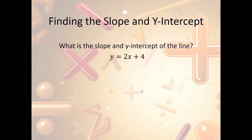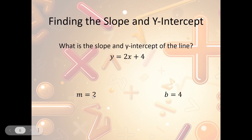Now let's pick out the slope and y-intercept from an equation. We're given y equals 2x plus 4, and we want to know the slope. We know that the slope is the one attached to x — it's a slippery slope to get hung up on your ex — so the one attached to x is 2. The slope is 2. The y-intercept is the lonely one, and the lonely one is 4. So the y-intercept is 4. That's how I pick out the slope and y-intercept given an equation.